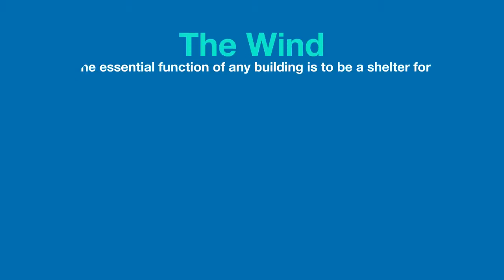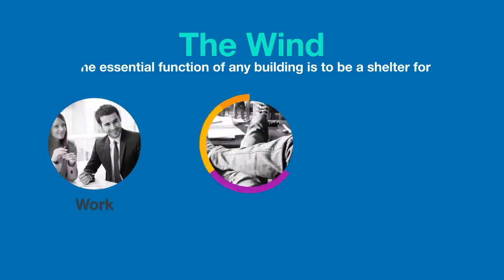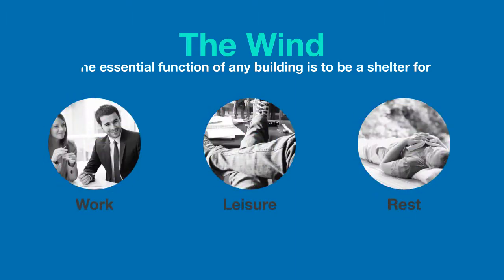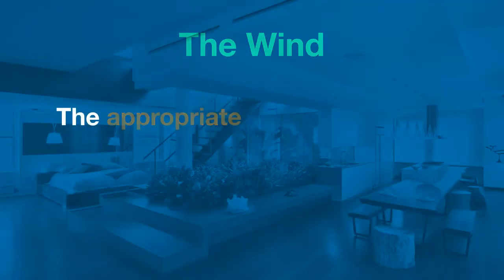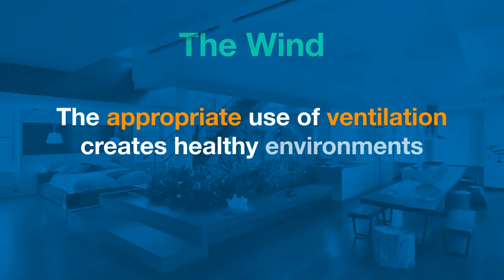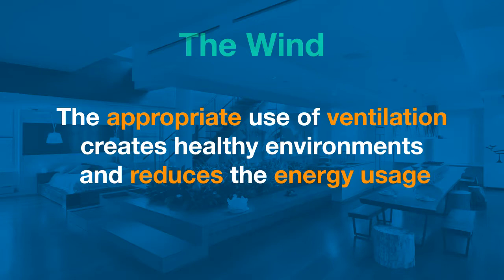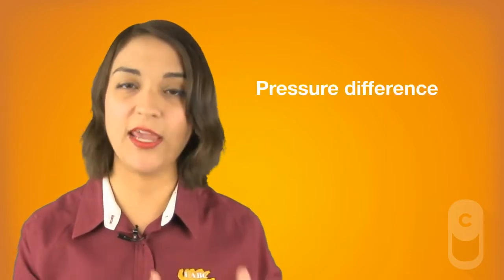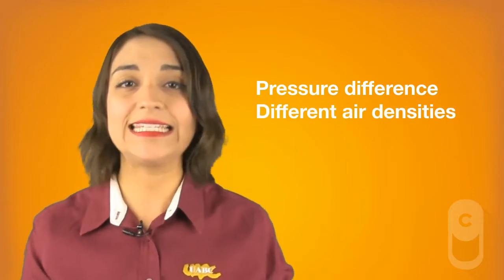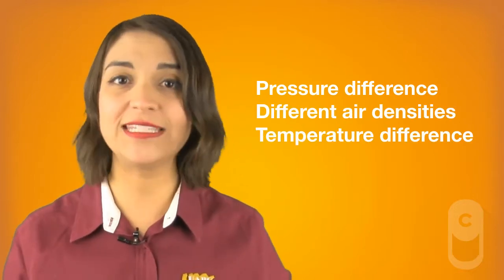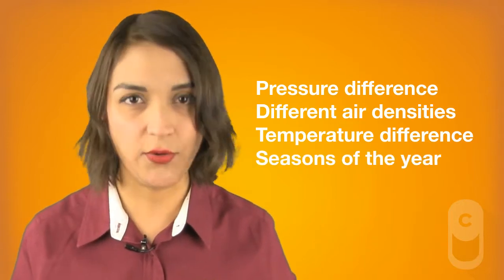The essential function of any building is to be a shelter for work, leisure and rest, which can only be obtained with environmental comfort and health. The appropriate use of ventilation creates healthy environments and reduces energy usage. Ventilation can be controlled by knowing the movement of wind inside the building without using mechanical systems. This movement produces a pressure difference in the air, due to different air densities as a result of temperature differences inside a building and considering the seasons of the year.